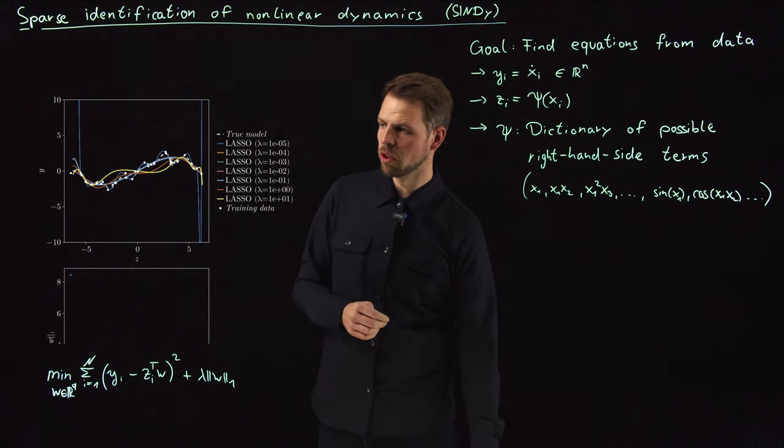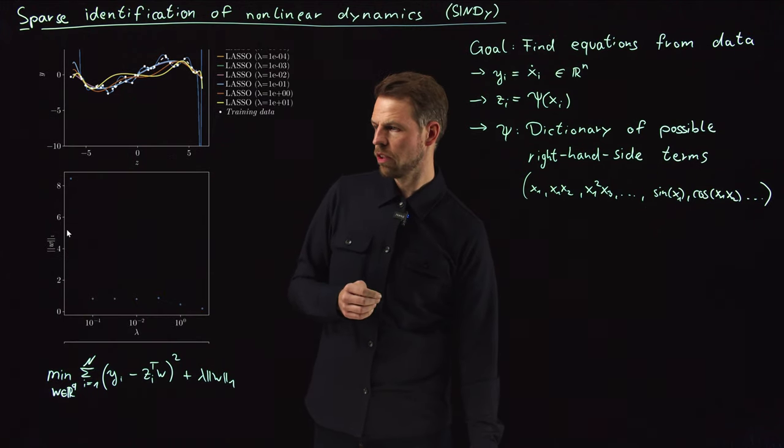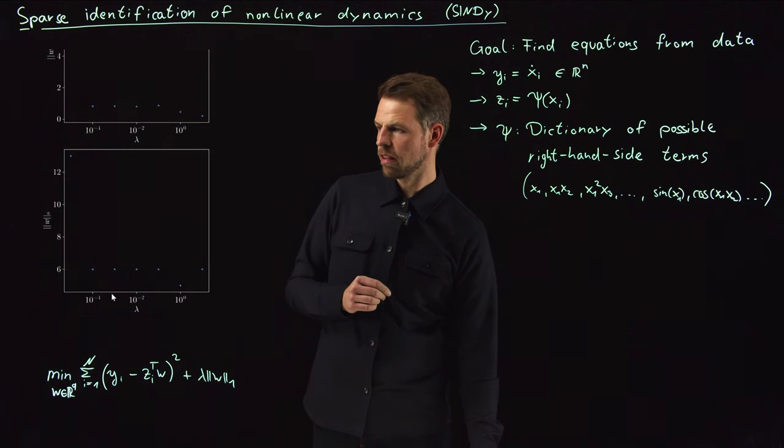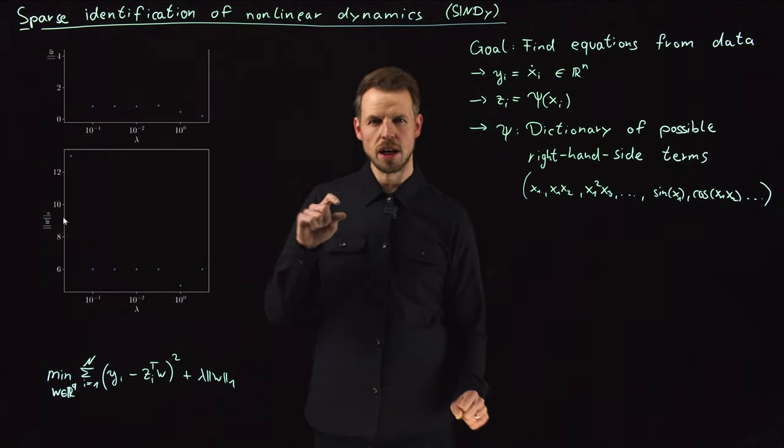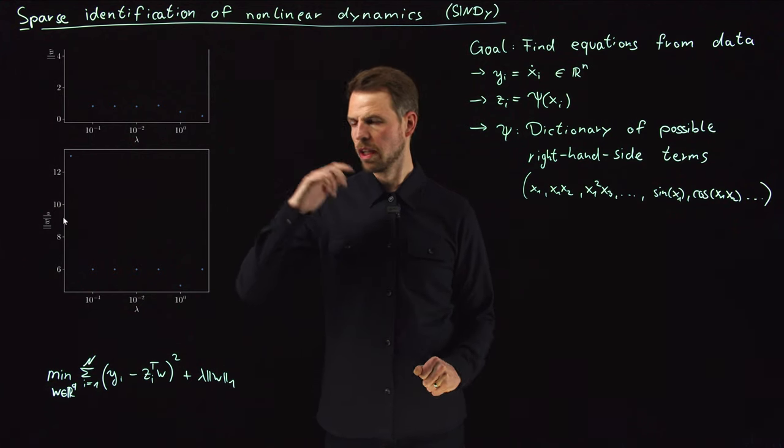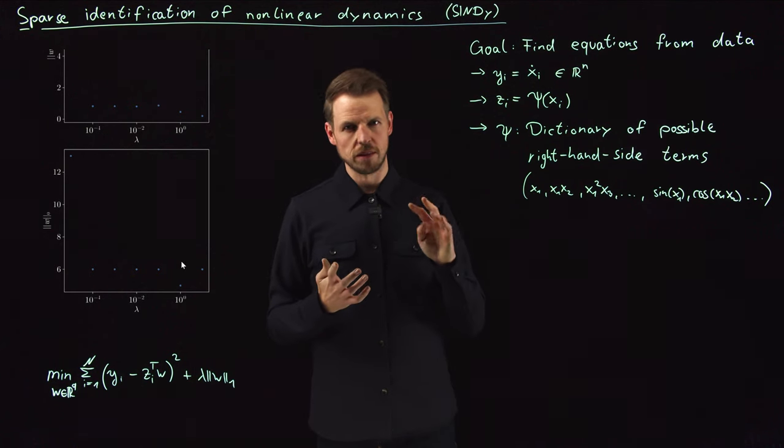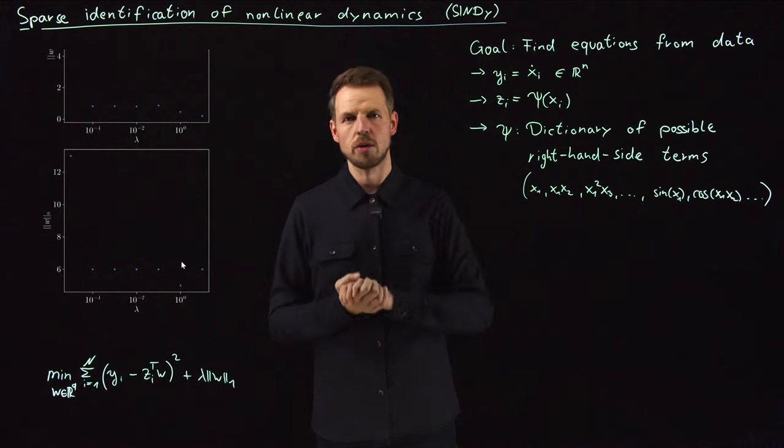This can now be used in regularization, but what's more interesting is, you see here, this is the one norm over these different regularization runs, and this is the zero norm. I've counted how many terms are non-zero in my polynomial dictionary. You will see that from these terms on, we have actually reduced the number of active terms to six, whereas the original dictionary had, I think, 30 terms.